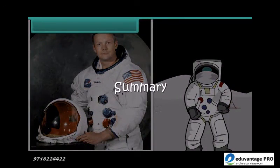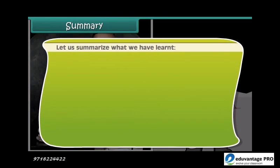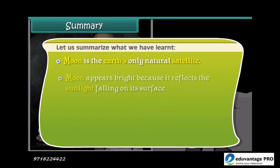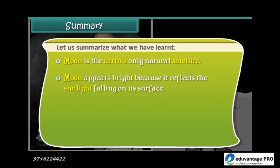Summary. Let us summarize what we have learned. The moon is the Earth's only natural satellite. The moon appears bright because it reflects the sunlight falling on its surface. The moon takes 27.3 days to orbit the Earth.